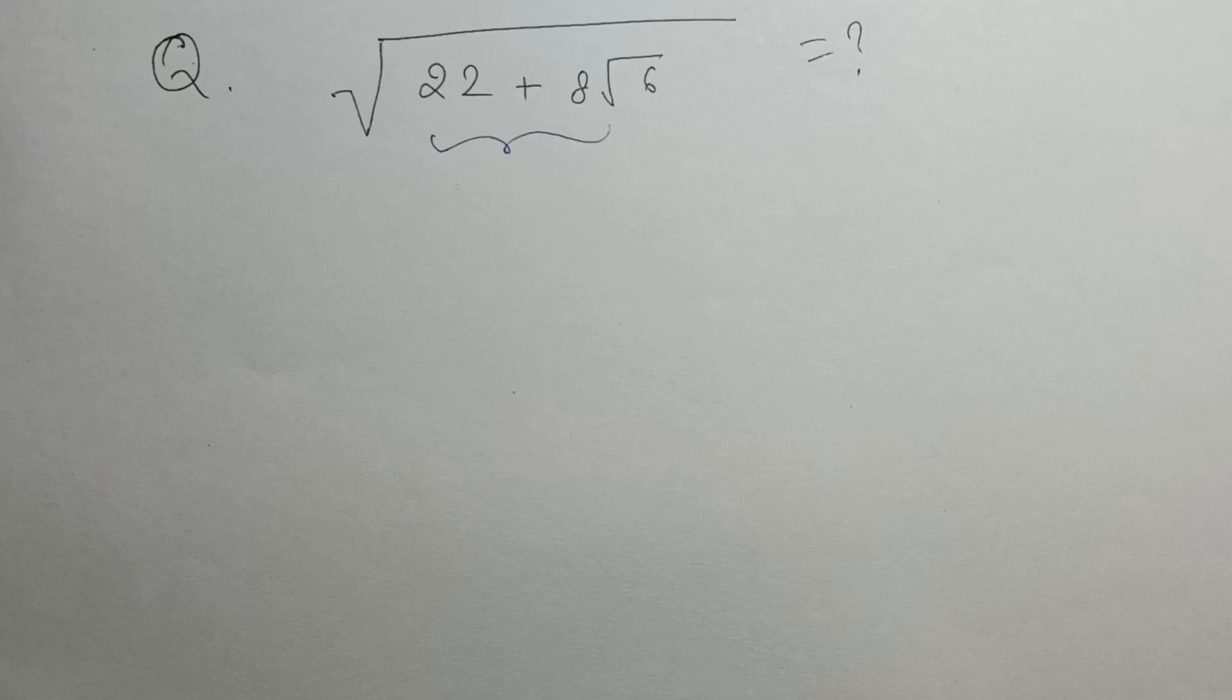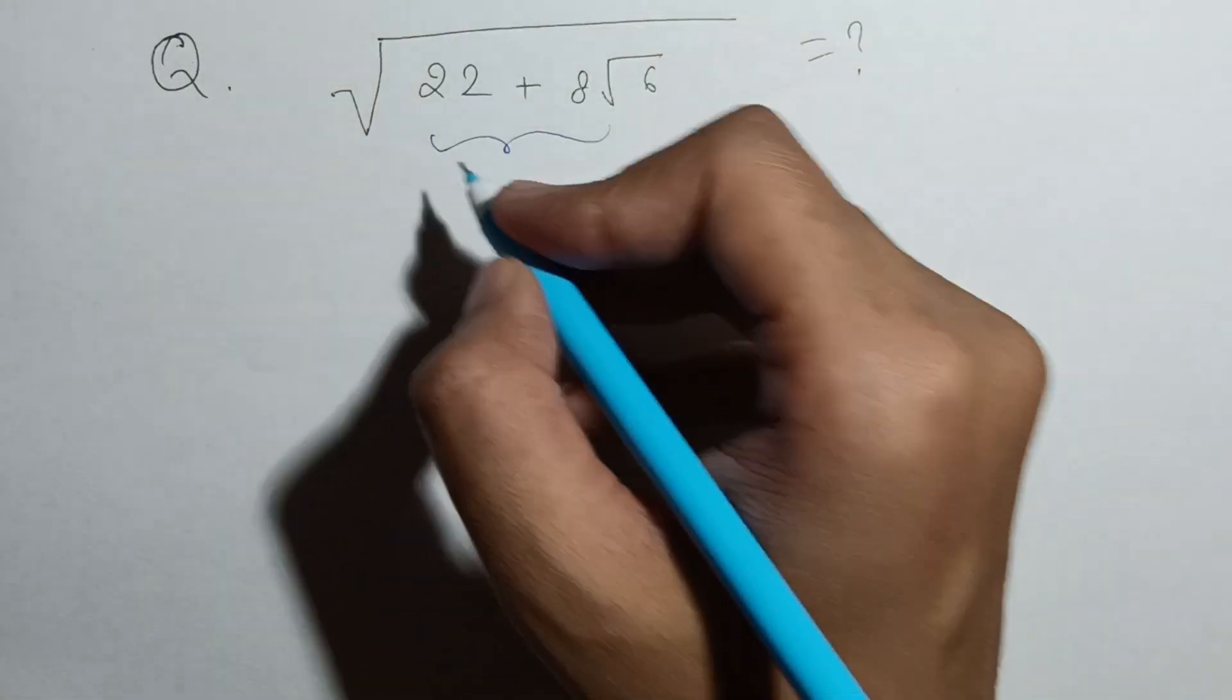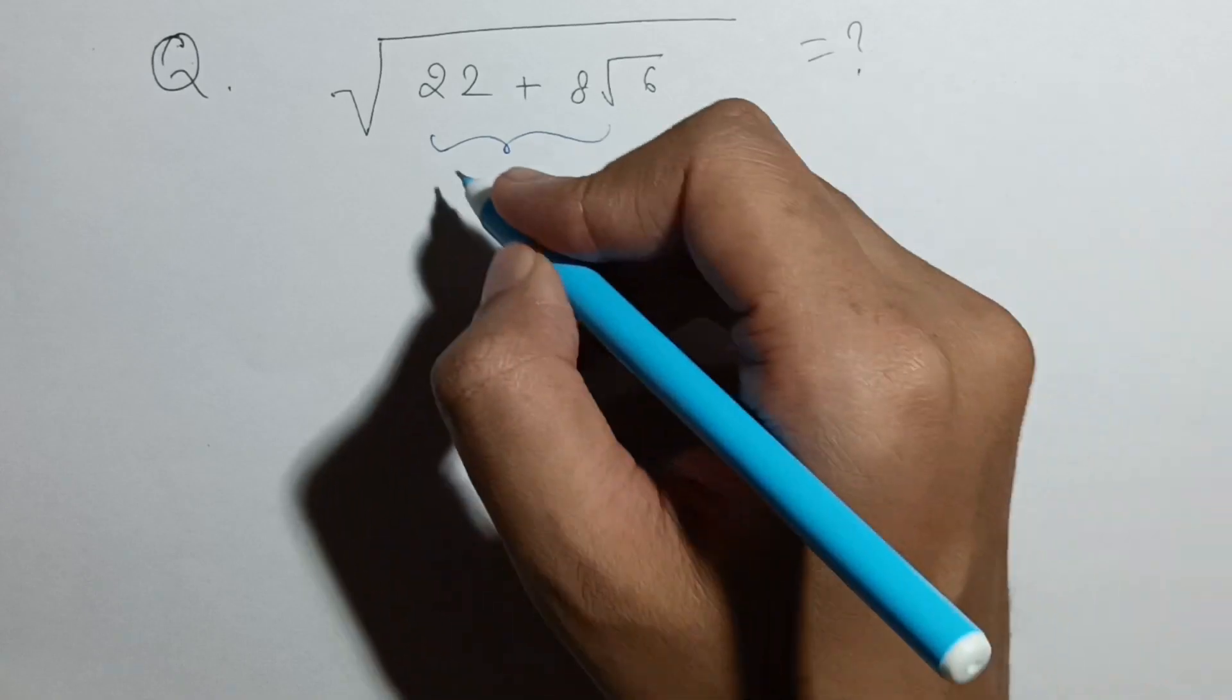In this video, we will solve a third problem. We have to find the square root of a given surd: 22 plus 8 root 6.